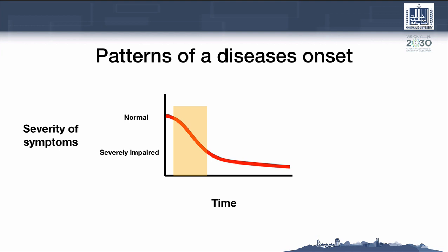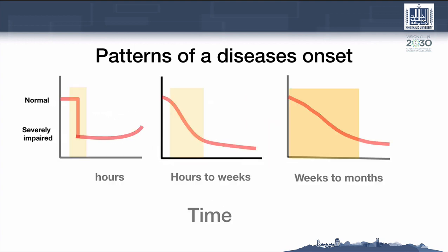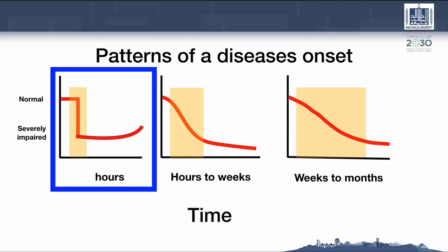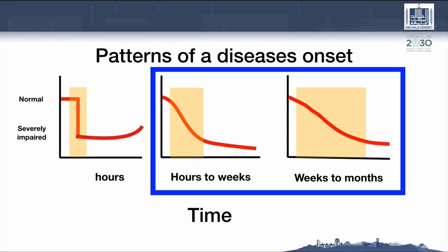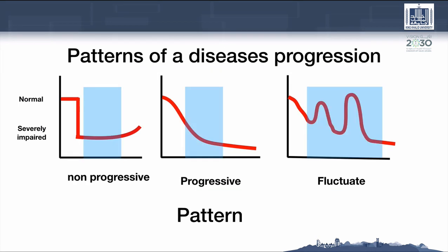This slow change can happen within hours, sometimes days. The disease that may take longer time for the change from normal to impairment can vary in severity. So these are the three patterns of disease onset: disease can start suddenly and abruptly, while other diseases have a gradual onset over hours, weeks, or months.